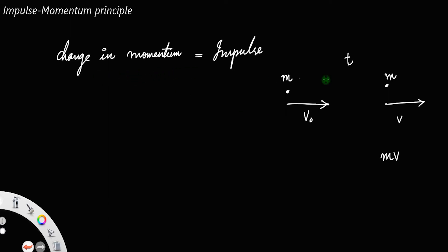Change in momentum basically means the final momentum, that is mv, minus the initial momentum, that is mv0.